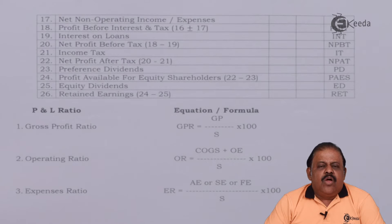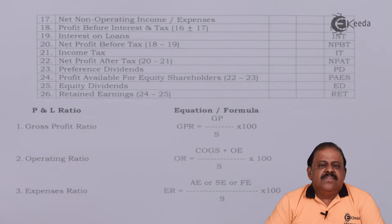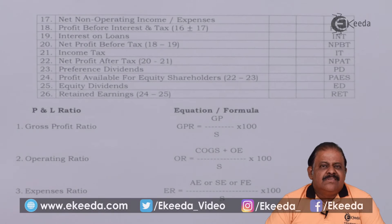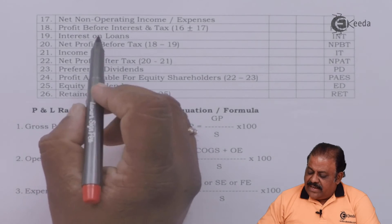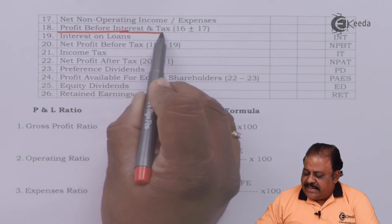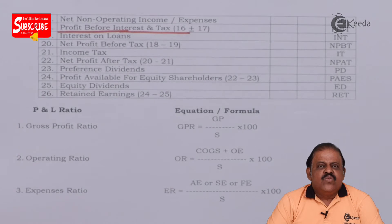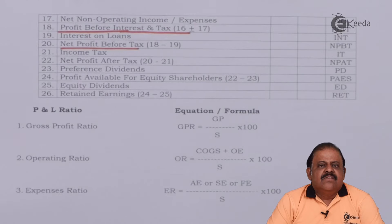To operating profit we add non-operating incomes and deduct non-operating expenses and losses. Non-operating income includes profit on sale of assets or investments during the year. Similarly, loss on sale of assets or investments is deducted as non-operating losses. This gives us profit before interest and tax. From profit before interest and tax we deduct interest, that is finance cost, to arrive at net profit before tax. From net profit before tax we deduct provision for tax to arrive at profit after tax.